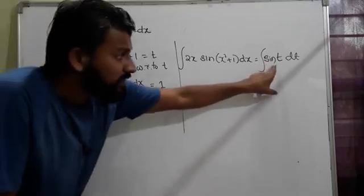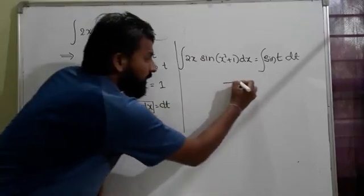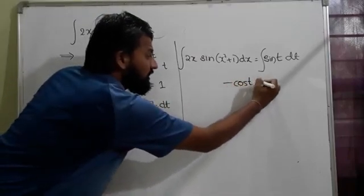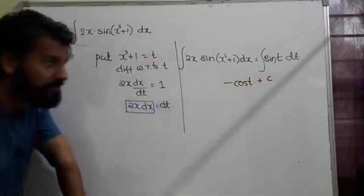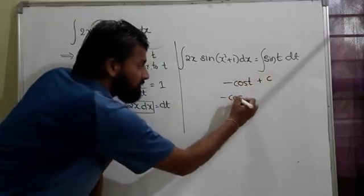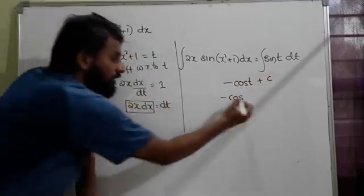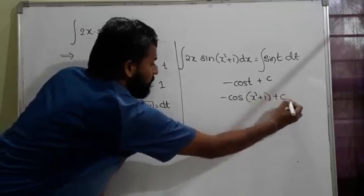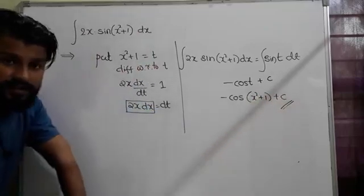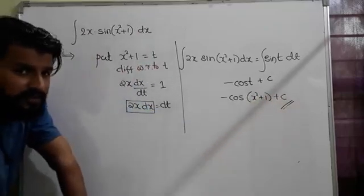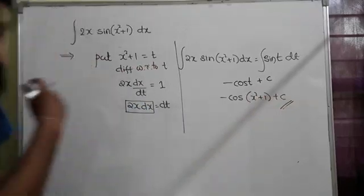So now integration of sin(t) dt is -cos(t) + c. This is -cos(t), which means -cos(x² + 1) + c. That's the answer. I hope you understand. Please pause the video and note it down.